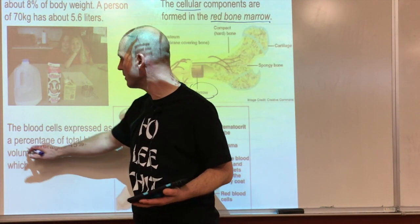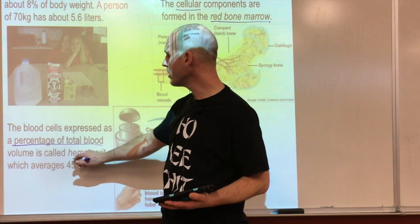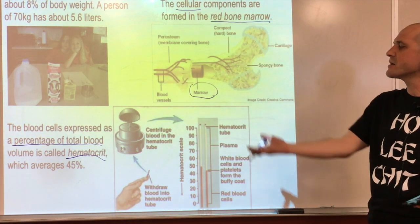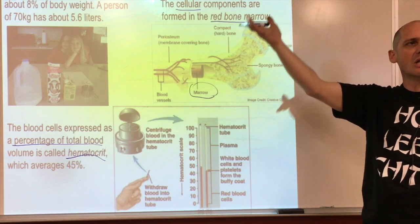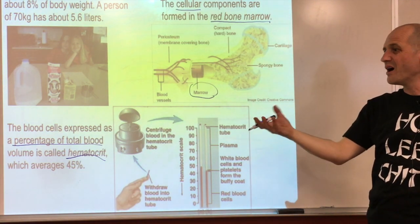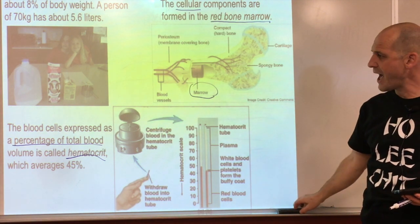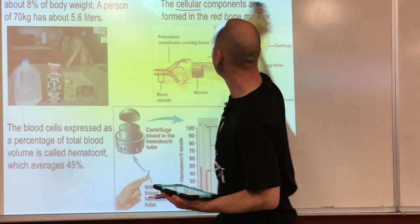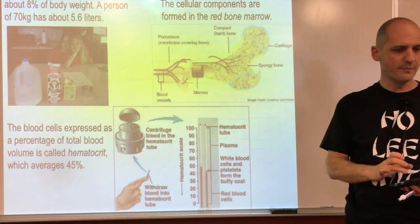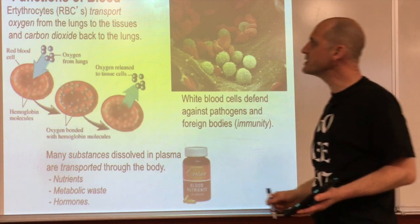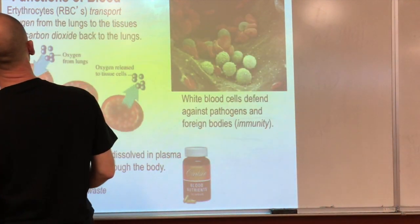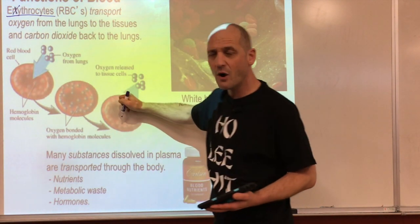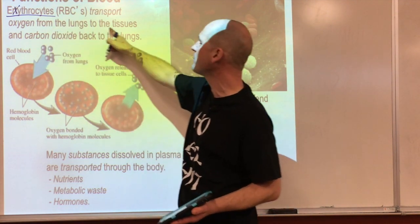Blood cells are expressed as a percentage of total blood volume - we call that the hematocrit. The higher the hematocrit, the less liquid, the more sticky and dense the blood. Average is about 45%, so 45% of blood is cells and 55% is the rest. Red blood cells - erythrocytes - transport oxygen from the lungs to the tissues and carbon dioxide back to the lungs.